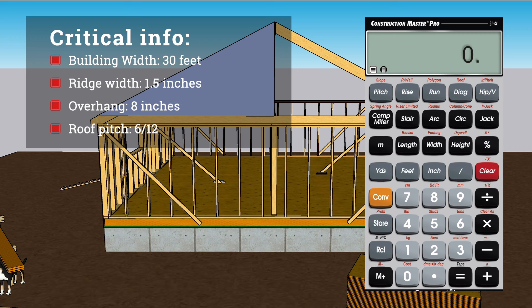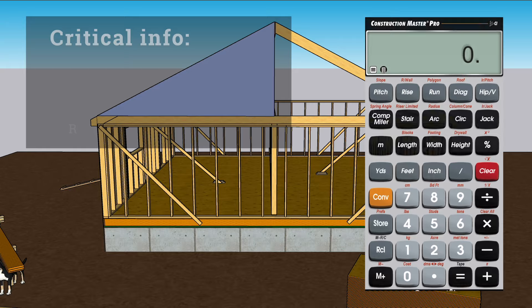To lay out the common rafters, we'll need to know the building width, the width of the ridge, the overhang, and the roof pitch.